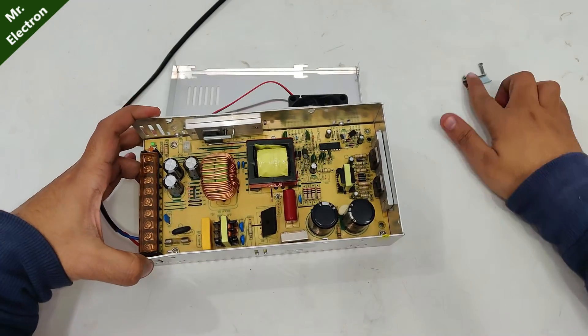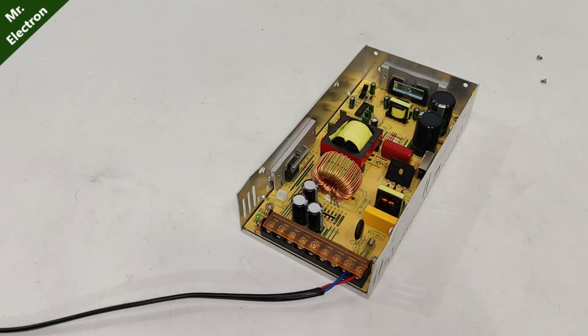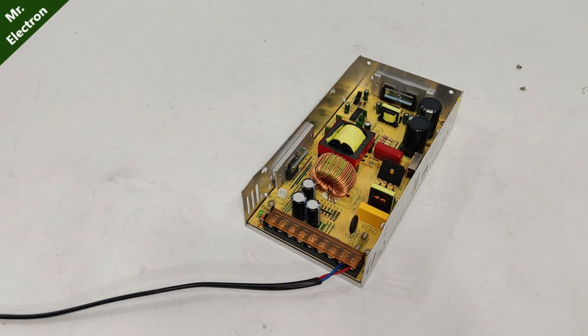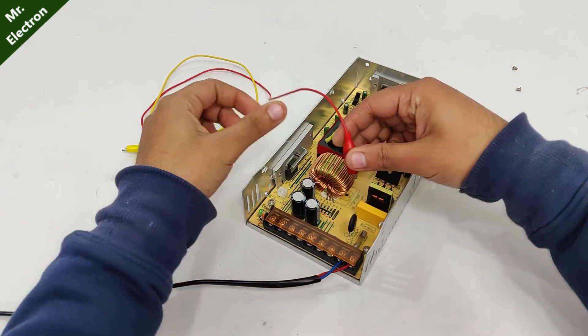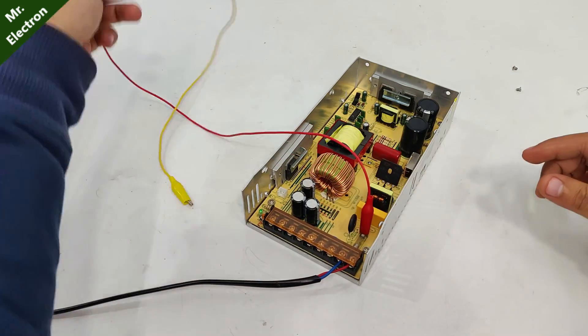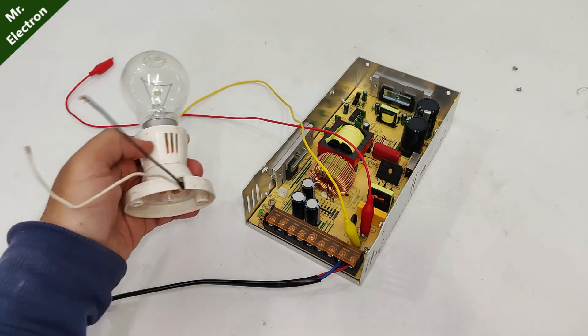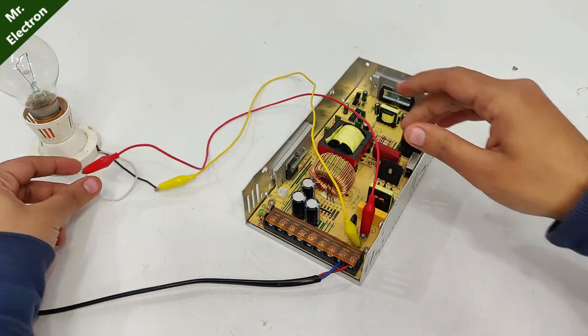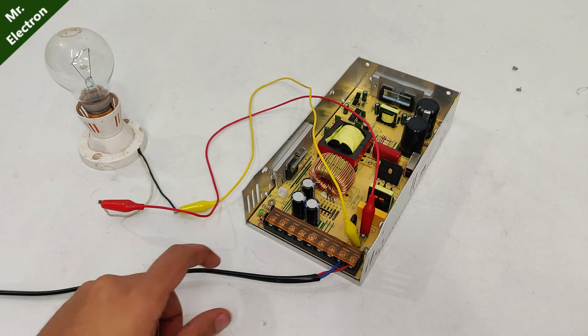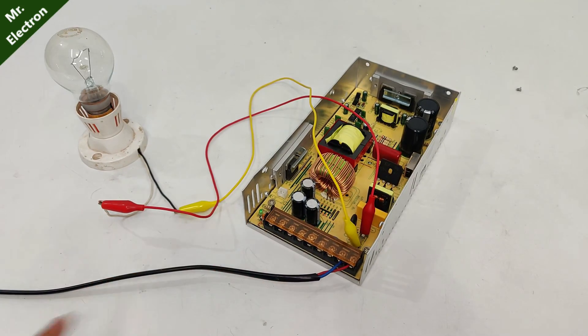Now the first thing to check in a dead power supply is its fuse. So here I'm going to do it with the traditional method. Take two jumper cables, connect one to one side of the fuse and other to the other side of the fuse, the metallic part. Next take a 100 watts bulb and connect the ends of the wires to the bulb like this. Now I'm going to turn on the power supply and see if this green LED glows this time.